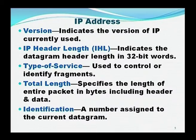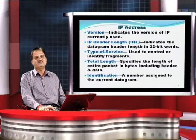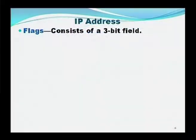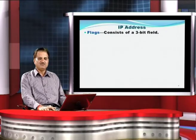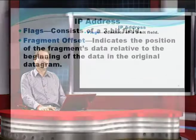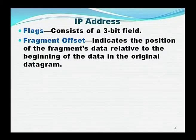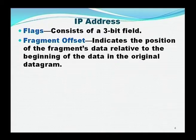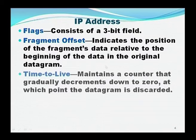Identification is a number assigned to the current datagram so that we can say this datagram is from a specific source. Flags is a specific 3-bit figure used for handling the type of datagram being transmitted. Fragment offset — suppose one datagram is of larger length, then it is divided into certain fragments which may contain 4 or 5 segments. This segment contains the fragment number, indicating the position of the fragment's data relative to the beginning of the original datagram.